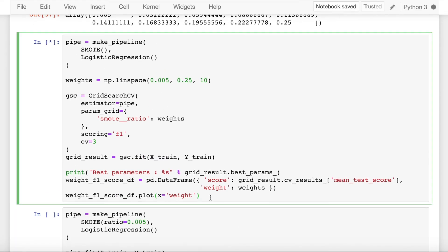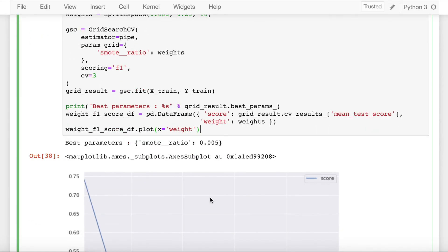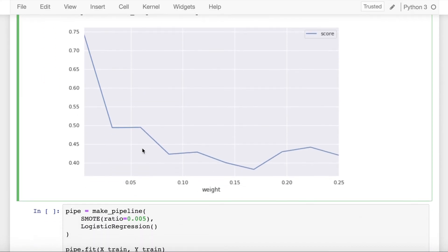Let's see what the results are. This process will take some time. Now using hyperparameter tuning, I am able to find out that the best SMOTE ratio is 0.05 which is evident from the graph as well.